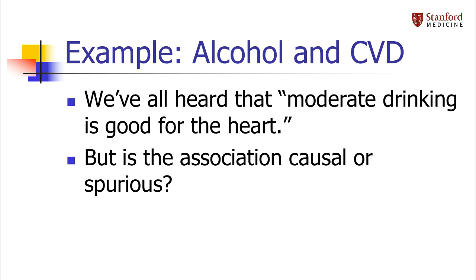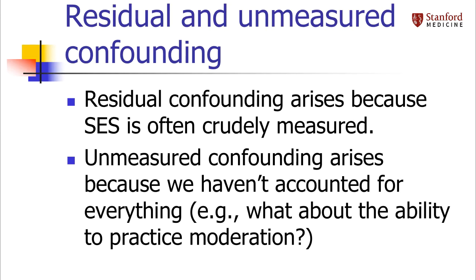Alcohol is a great example of a confounded exposure. We've all heard that moderate drinking is good for the heart. Indeed, people who drink moderately, particularly red wine, have lower rates of heart disease than non-drinkers and heavy drinkers. But it's very hard to tease out whether this association is causal or due to confounding. Moderate drinking is strongly associated with higher socioeconomic status, and moderate drinkers also tend to exercise more and have healthier weights. Researchers do try to adjust for these confounders in their regression models, but variables like socioeconomic status tend to be crudely measured, so we can't perfectly adjust for them and end up with leftover or residual confounding.